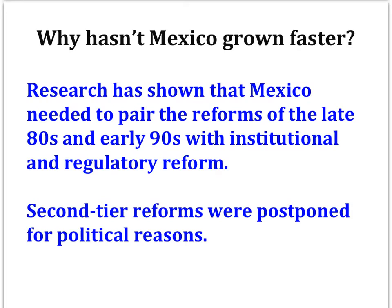Research has identified a number of factors that might explain why incomes in Mexico aren't converging to U.S. incomes. First, some have argued that the economic reforms of President Salinas in the late 80s and early 90s actually set the country back, in the sense that they weren't paired with strong institutional and regulatory reform — so reforms like privatization of the banking system ended up creating new problems. Second, Mexico could have used follow-up second-tier reforms like overhauling labor laws, but these have been avoided because of their political sensitivity. And third, policymakers have been unable to efficiently counteract external shocks via fiscal and monetary policies.